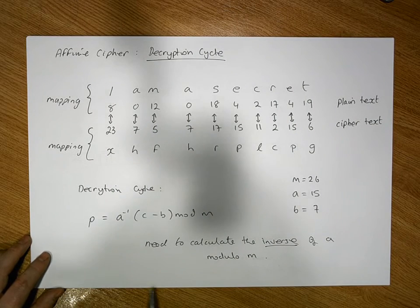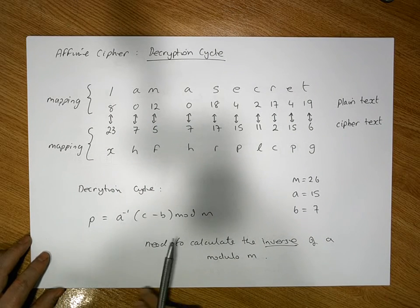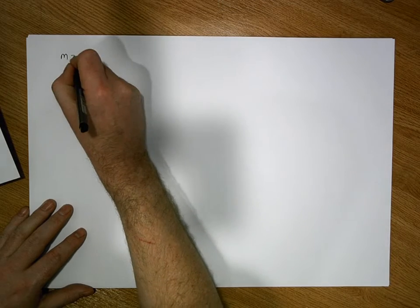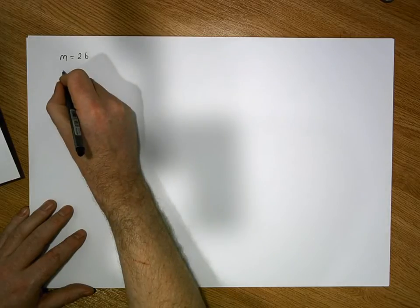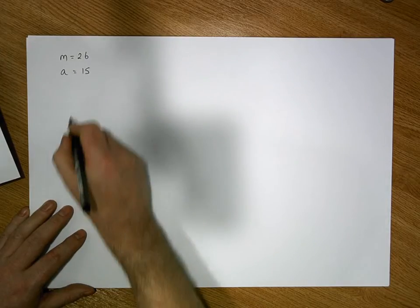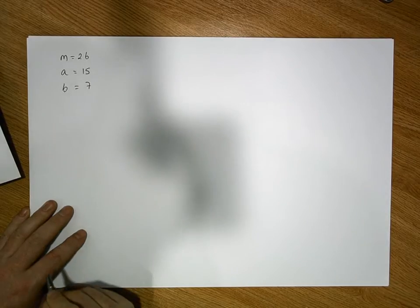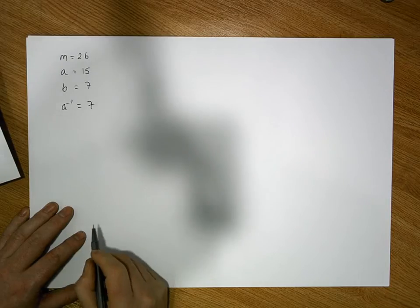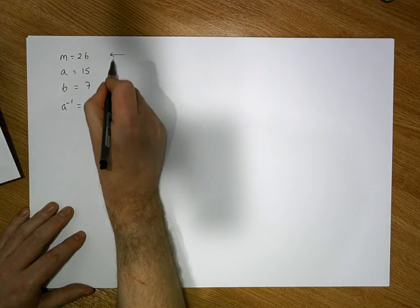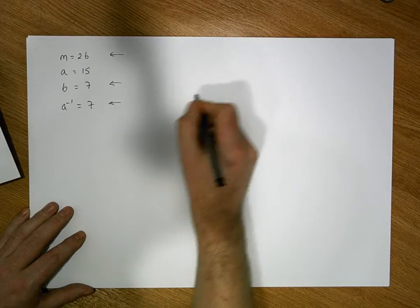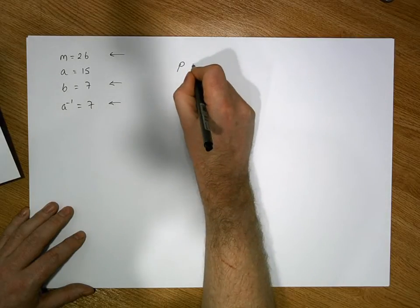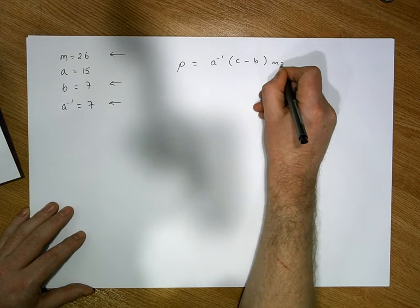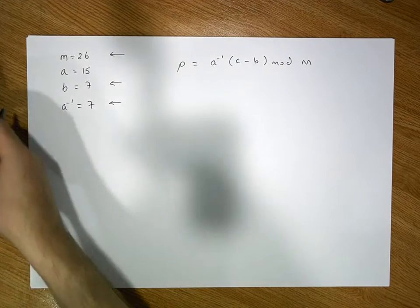We now know that a inverse must be equal to 7. So the values we have are: m is equal to 26 (the size of our alphabet), a is equal to 15, b is equal to 7, and a inverse is equal to 7. The values we're going to use in the decryption phase are m, b, and a inverse, because the plain text is equal to a inverse times the cipher text minus b, modulo m.